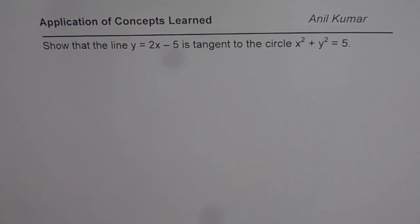I am Adil Kumar and now let us apply the concepts learned about linear and quadratic systems and about the number of roots. The question here is: show that the line y equals 2x minus 5 is tangent to the circle x square plus y square equals 5.